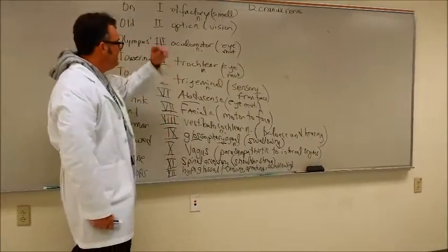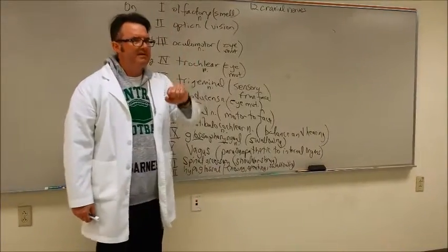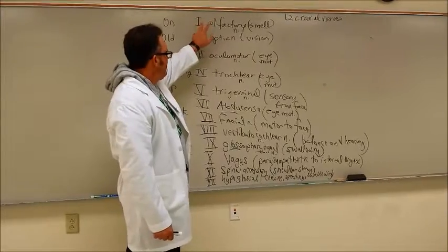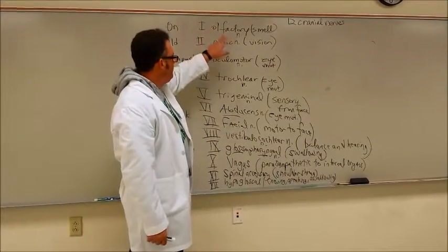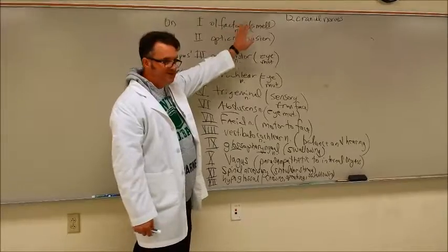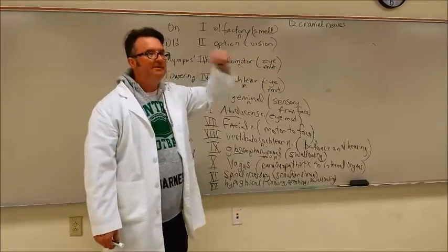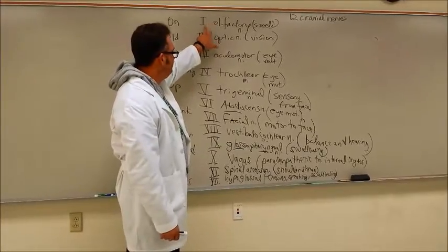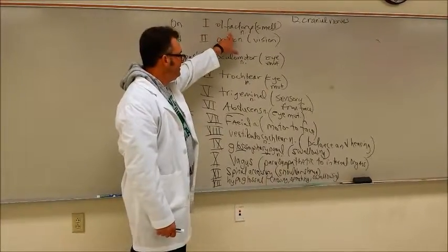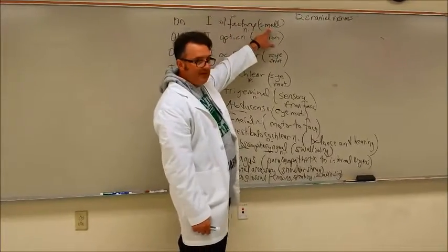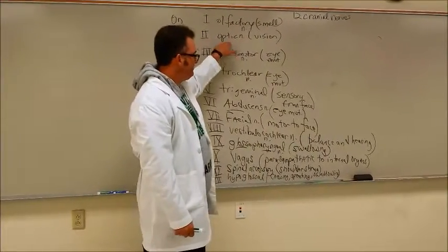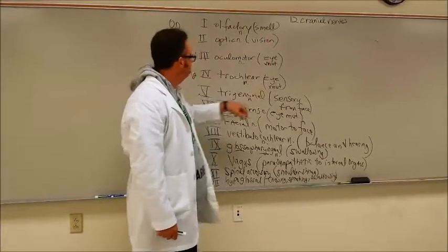So I want you to say these. Say these after me. Rehearse these with me. I'm going to say one, you say one. Olfactory, you say it, and then I'm going to say sense of smell, you say sense of smell. Let's start logging this in. One. Olfactory nerve. Sense of smell. Get bossy with this. Two. Optic nerve. Vision. Good.